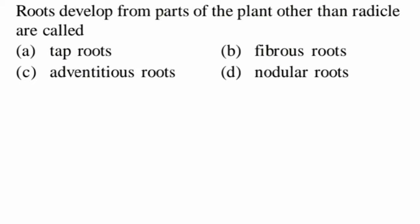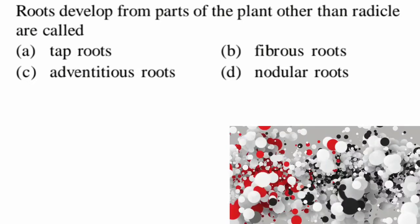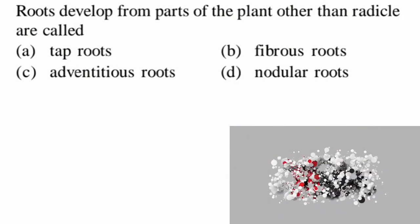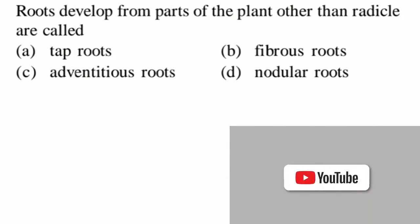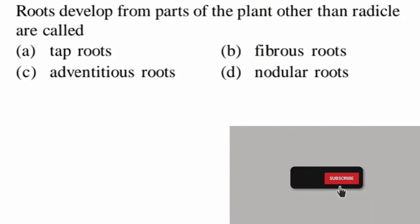Next question: roots that develop from parts of the plant other than the radicle are called — directly from NCERT — adventitious roots. Examples include prop roots in banyan tree, stilt roots in sugarcane, Zea mays, and screw pine. If a root originates directly from the radicle it is called a tap root. So option C, adventitious roots, is correct.